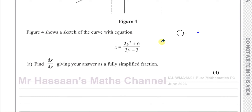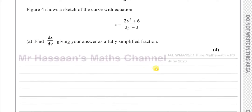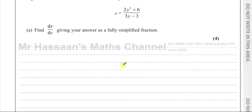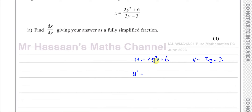Normally we have equations as y equals some function of x and we find dy/dx, but here we have x as some function of y and we have to find dx/dy. We go about it in a very similar way. We have a quotient, so we need to use the quotient rule. You call the numerator u, so u is 2y squared plus 6, and the denominator v is 3y minus 3. Differentiating u with respect to y gives u' = 4y, and differentiating v gives v' = 3.